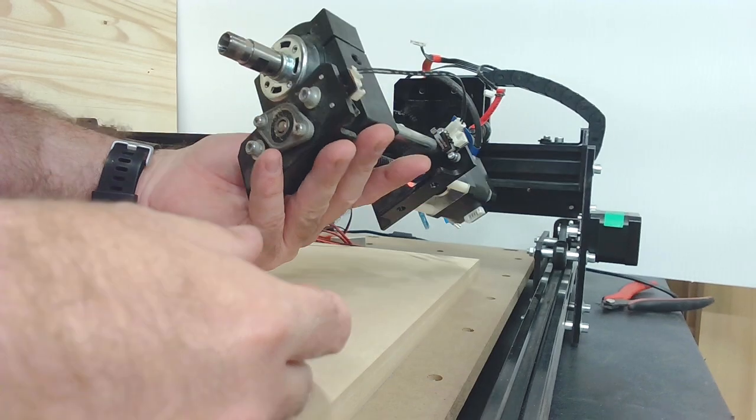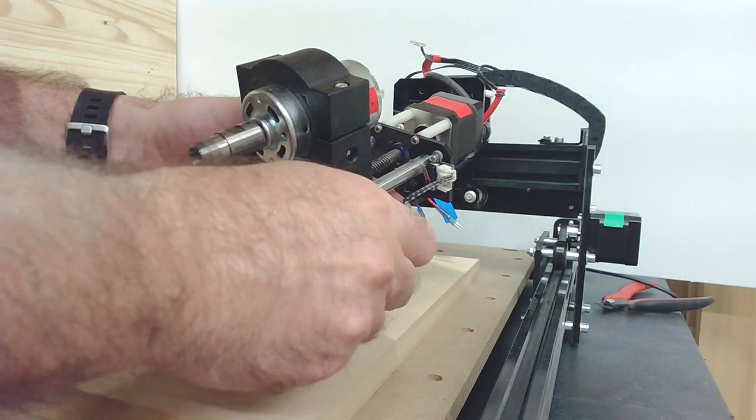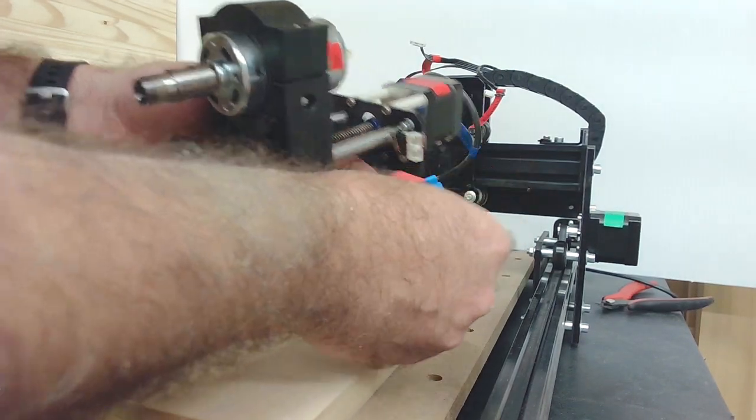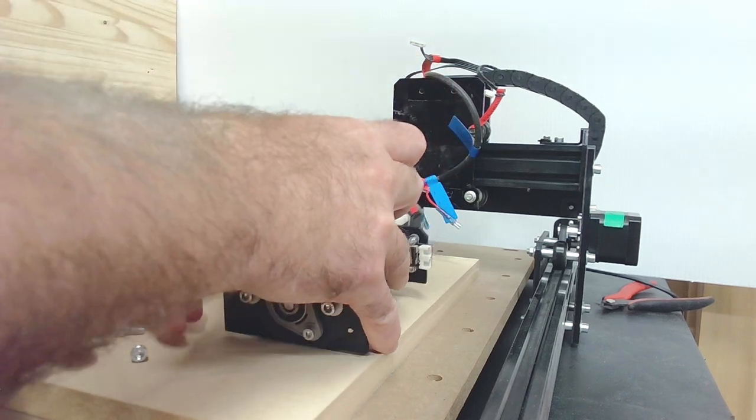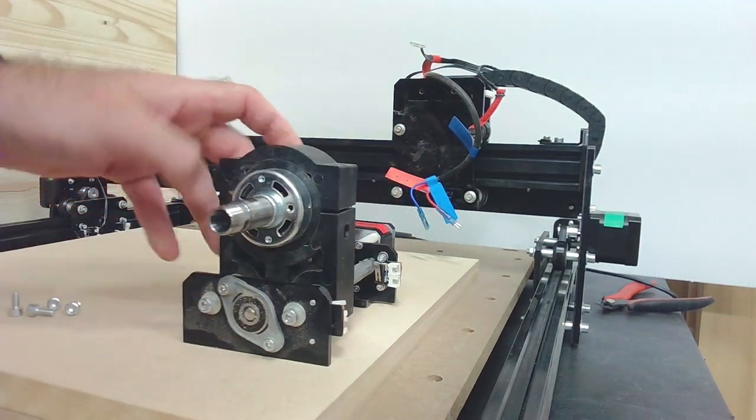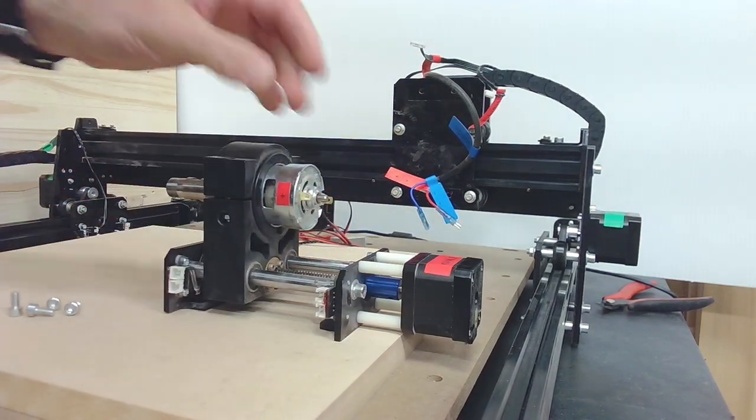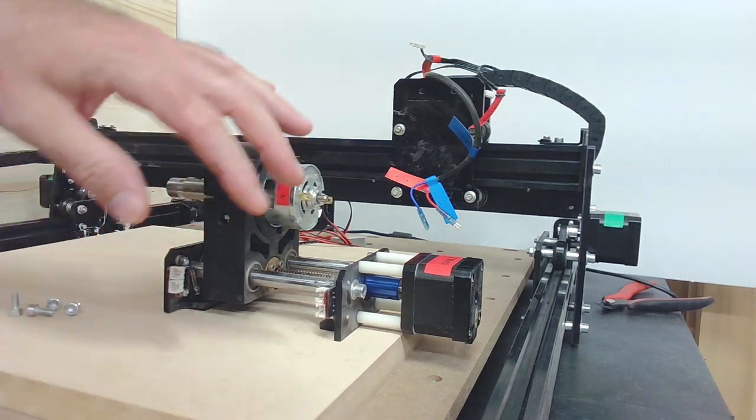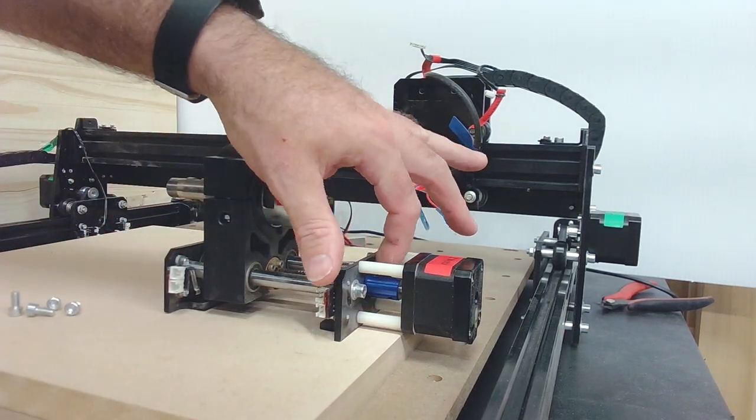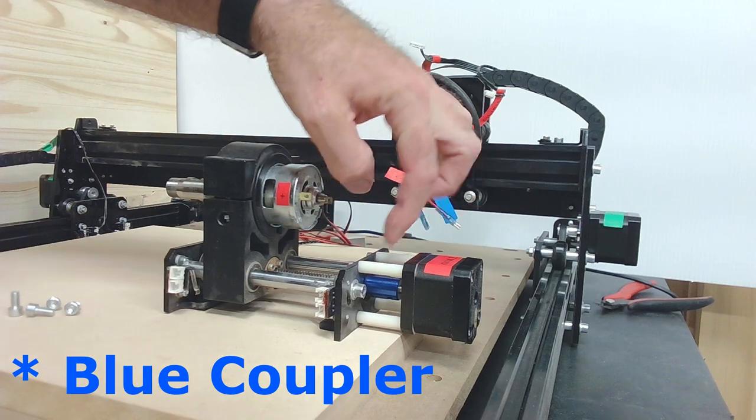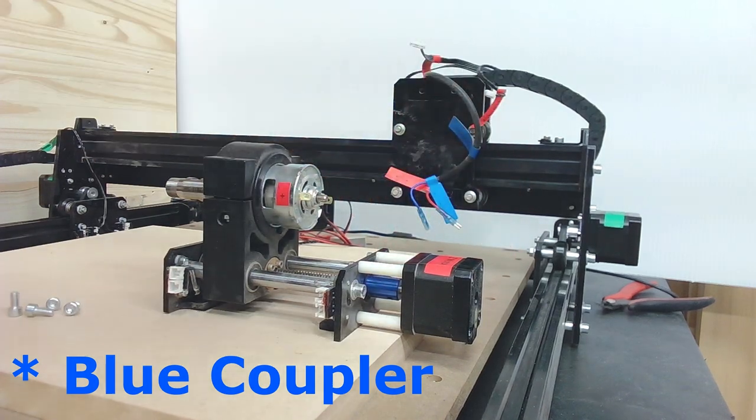With all those connections off, we have the Z-axis right here. I'm going to disconnect this cable here as well to get it out of the way. The next step is to simply remove these two screws and the lower set screws on this blue connector here.